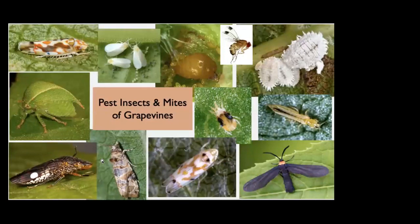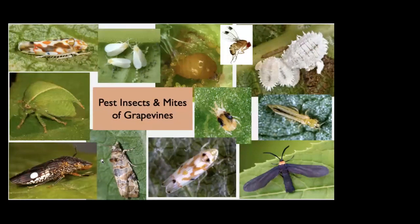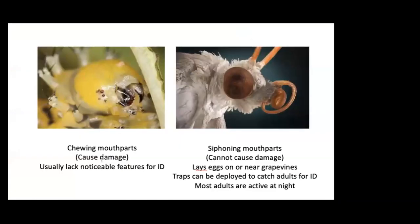Pest insects and mites of grapevines. Pests can cause direct damage, and that damage also opens up the grapevine or fruit to secondary infections from bacteria or fungi that can enter feeding wounds. They can also vector viruses, bacteria, or fungi that cause disease. We're going to start out with moths and butterflies.